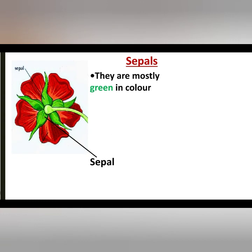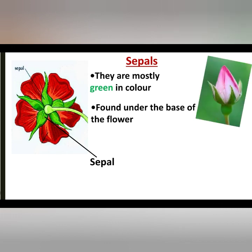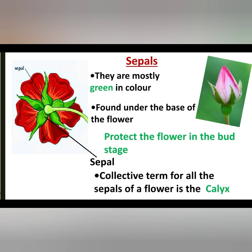The sepals are the green parts of the flower, mostly found under the base of the flower. The main function of the sepals is to protect the flower in the bud stage. So the sepals are the green parts which are there to render protection to the flower bud. A collective term for all the sepals of a flower is the calyx.